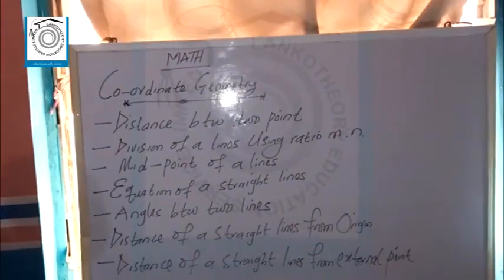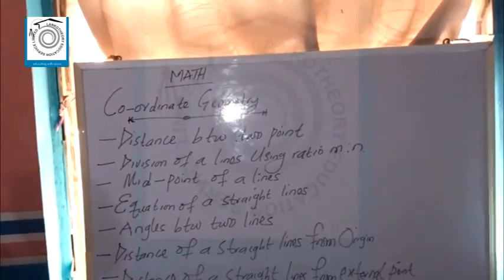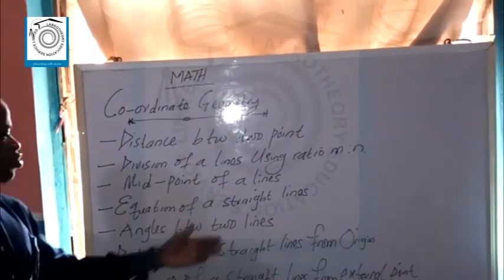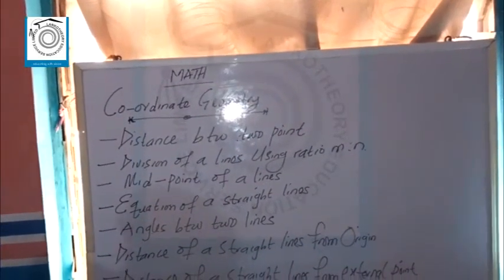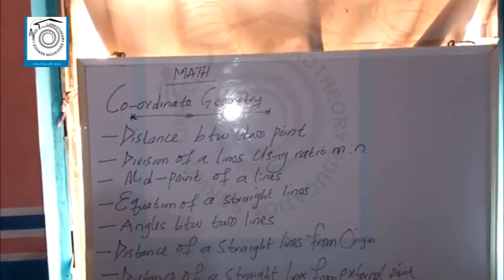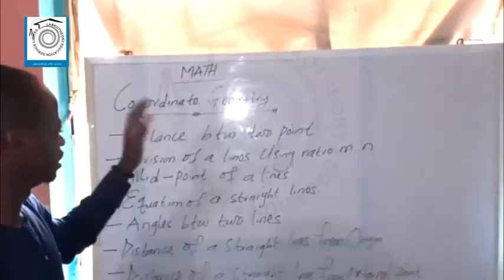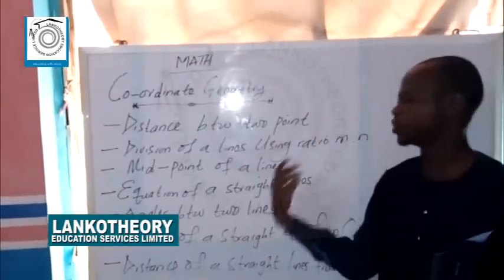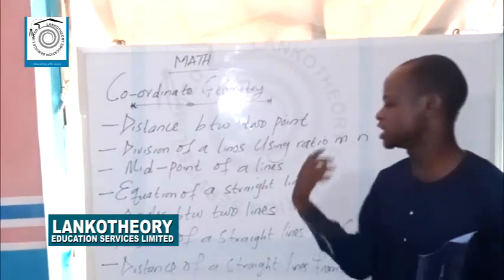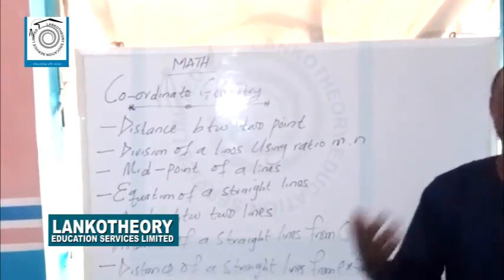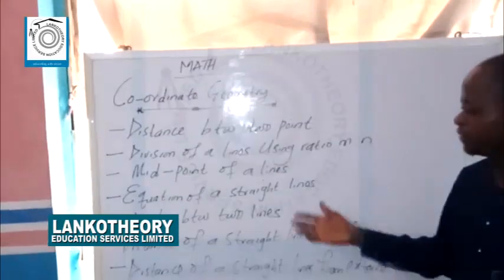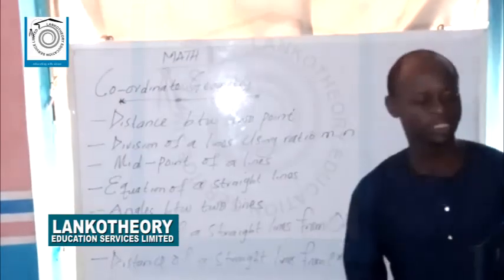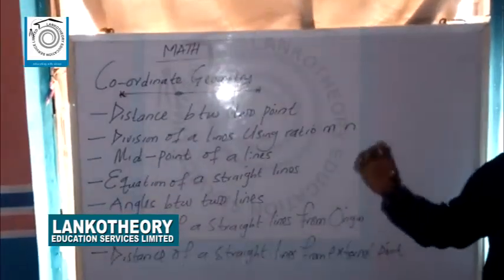Under this Coordinate Geometry: the distance between two points, the division of a line using two end points, the midpoint of the line, the equation of the straight line, angle between two lines, the distance of the straight line from the origin, and the distance of the straight line from the external points. At the end of the class you must be able to calculate each of these.